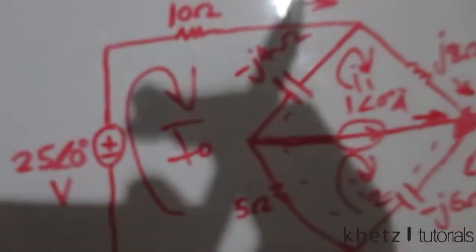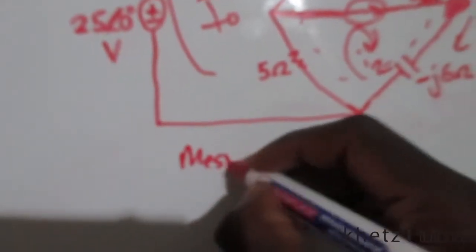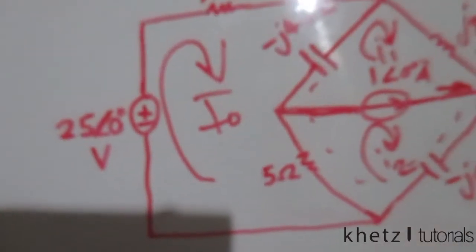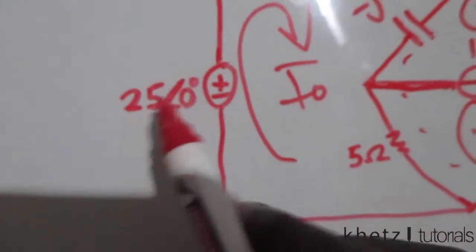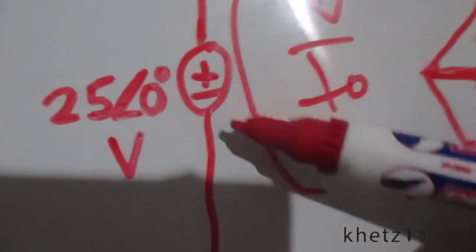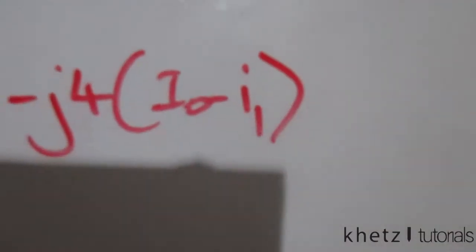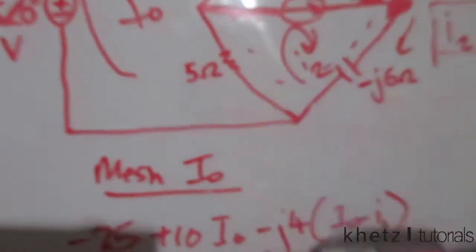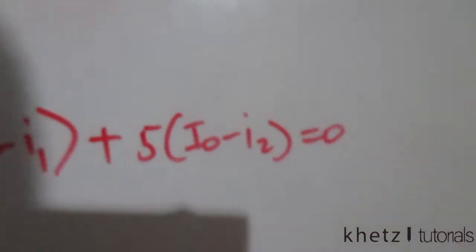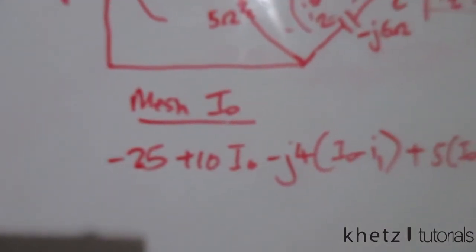The second equation comes from the IO mesh. Starting at the voltage source we get negative 25, then plus 10·IO from the 10Ω element, then negative j4·(IO − I1) for the shared impedance, then plus 5·(IO − I2) for the 5Ω element shared with I2. That completes the IO mesh equation.